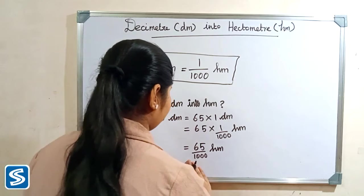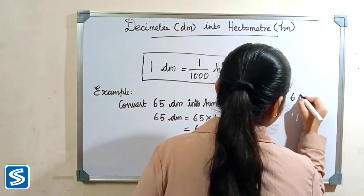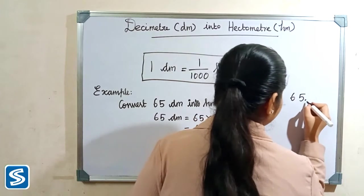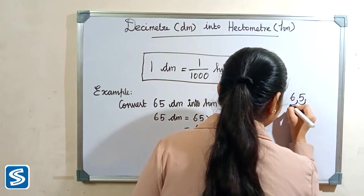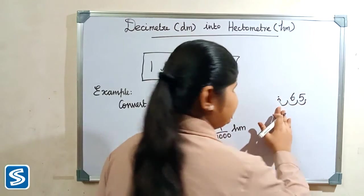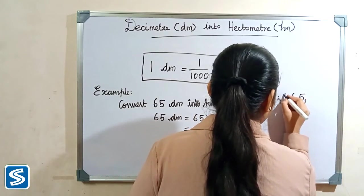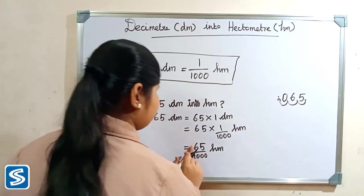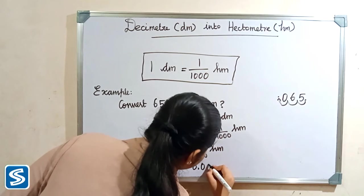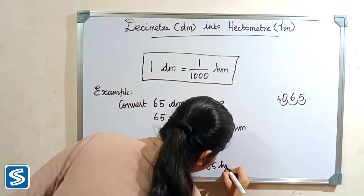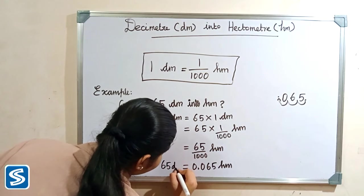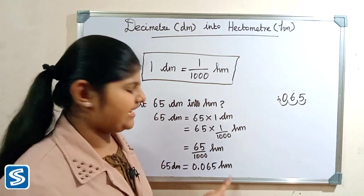The easy way to divide by thousand is to move the decimal point three places to the left — one, two, three. We fill zeros in the empty spaces. So when we divide 65 by thousand our answer will be 0.065 hectometer. Therefore, 65 decimeter is equal to 0.065 hectometer.